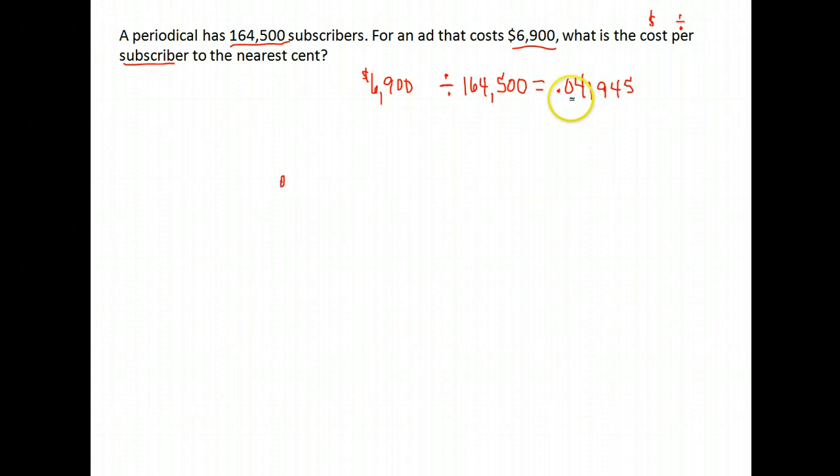Now again, they want to round us to the nearest cent, which is two places after the decimal. So we cut off here. Look at the next number so you know whether to round up or stay. One is smaller than five, so we just stay. And the cost per subscriber for this ad is 4 cents.